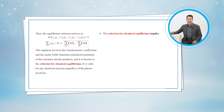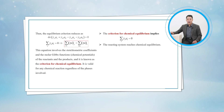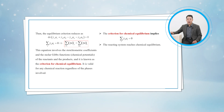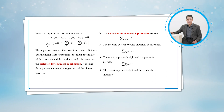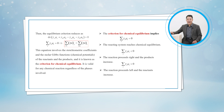The criterion for chemical equilibrium implies: when the value of the summation is zero, the reacting system reaches chemical equilibrium; when the value of the summation is negative, the reaction proceeds to the right and the products increase.